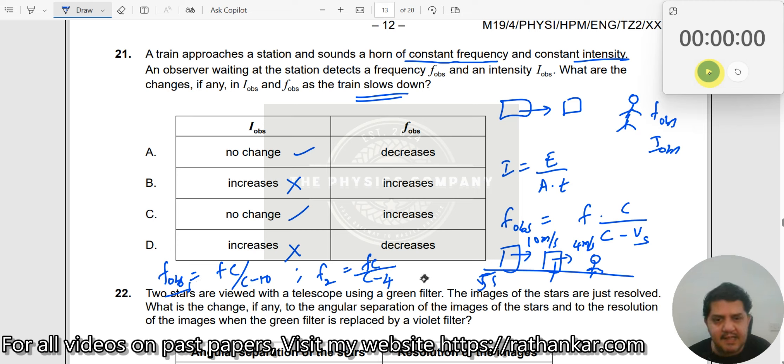F2 is lesser than F1. Which is F1? The frequency that was observed here is F1. The frequency that you observe here is F2. This frequency is lesser than this frequency. Therefore, the answer should be decreases.